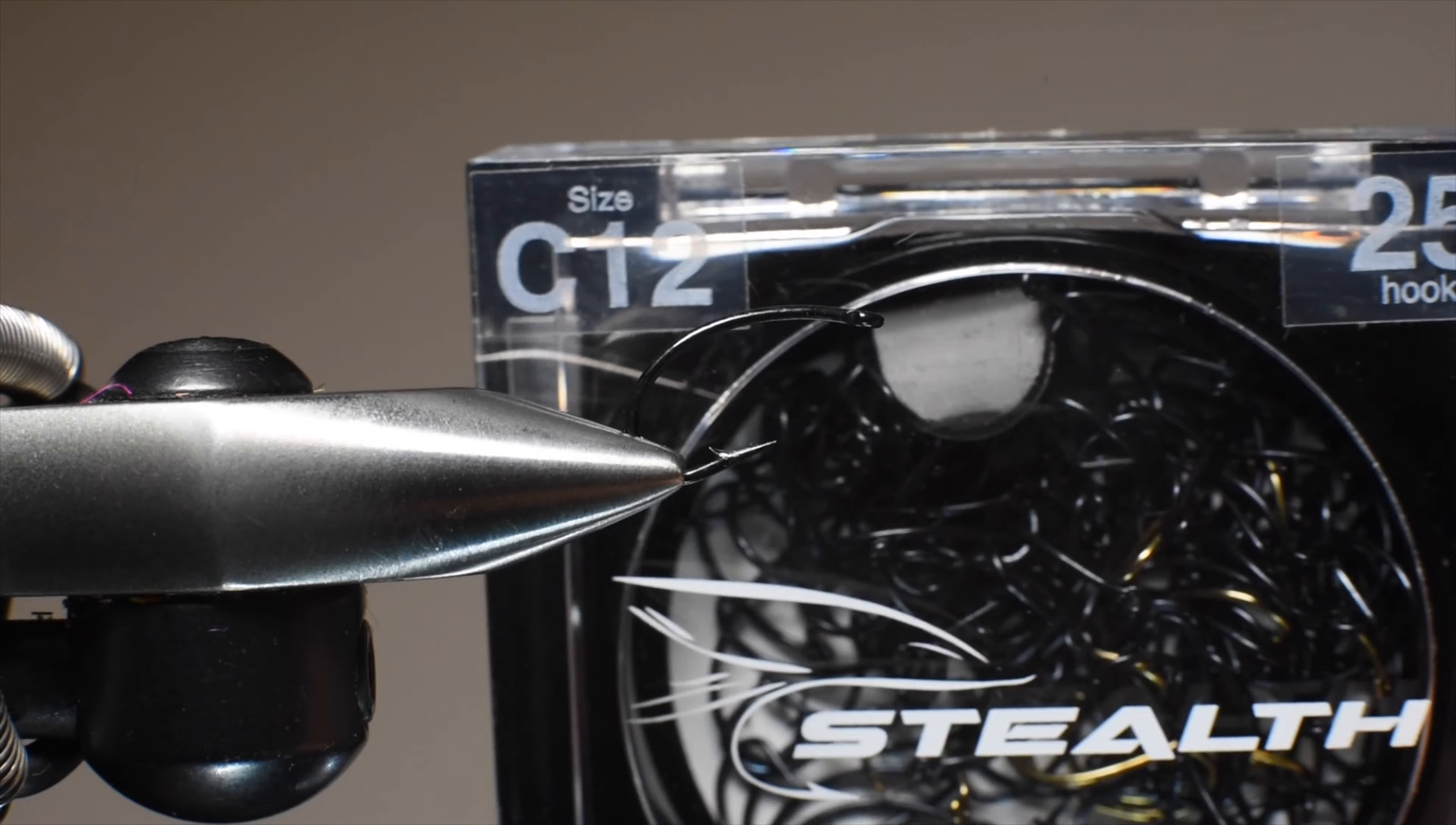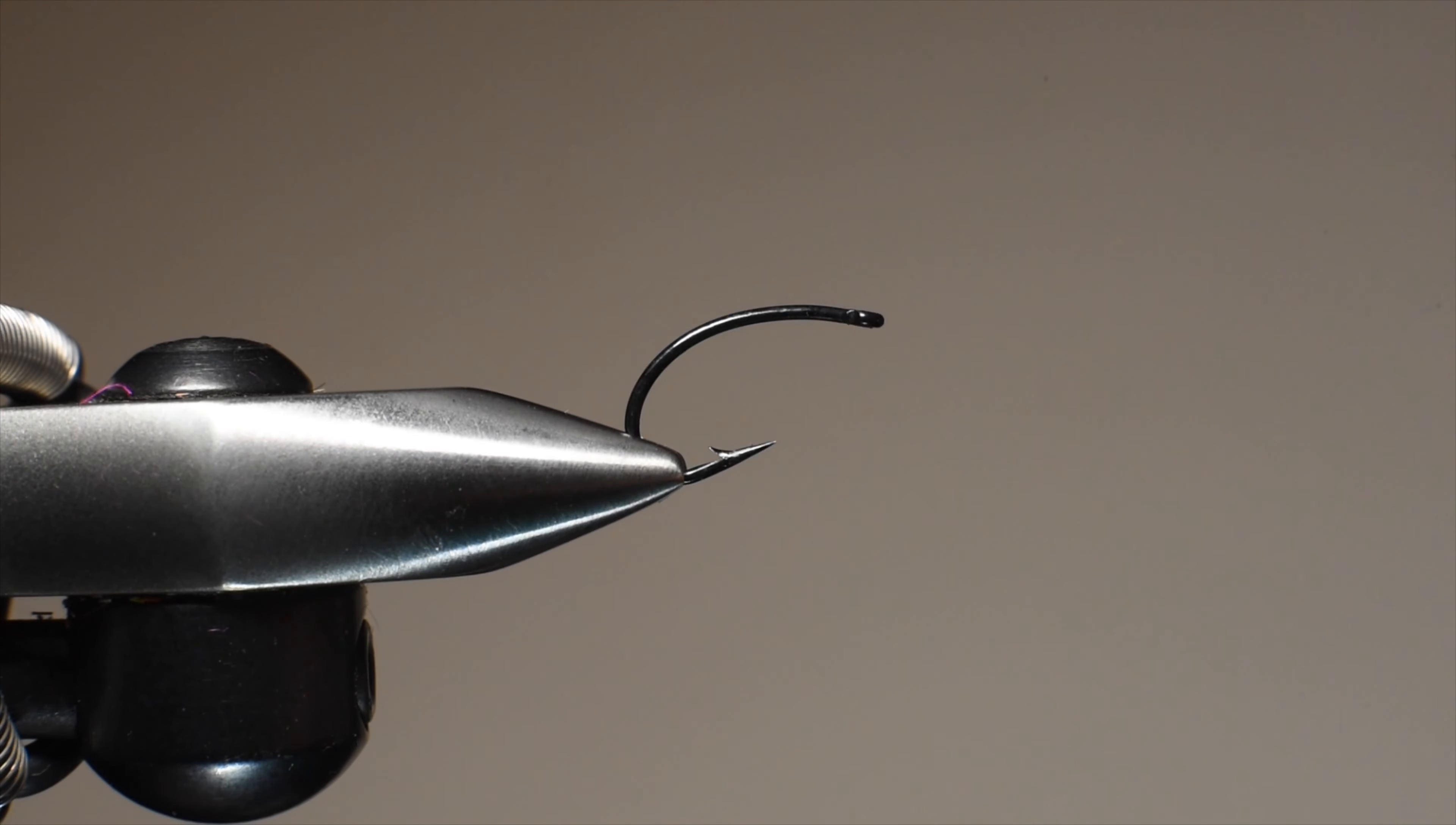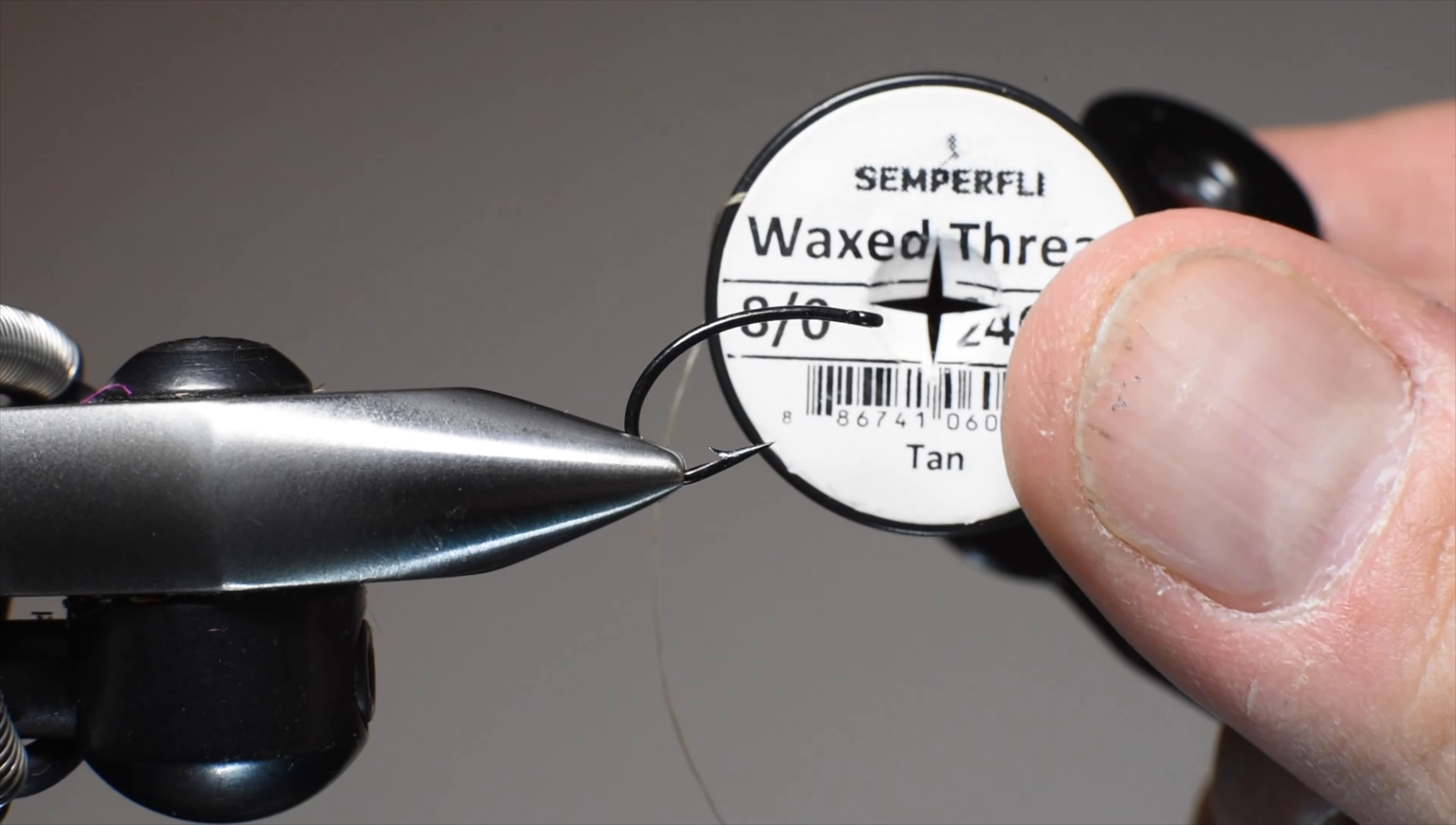We've got a C12 in the vise, this is a Stealth hook in black. It's a curved shank, perfect for scuds. We're going to be using some Semperfli wax thread, this is in a tan color.